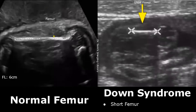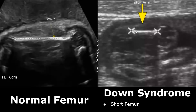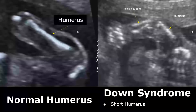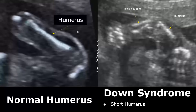A short femur is diagnosed when the femoral length is short for gestational age. It is associated with many congenital anomalies and can be seen in a fetus with Down syndrome. A short humerus is also associated with Down syndrome — the humeral length is short for gestational age, and it is often seen in a fetus with Down syndrome.